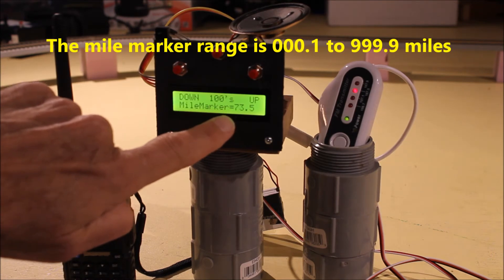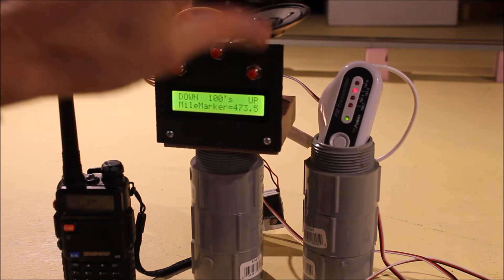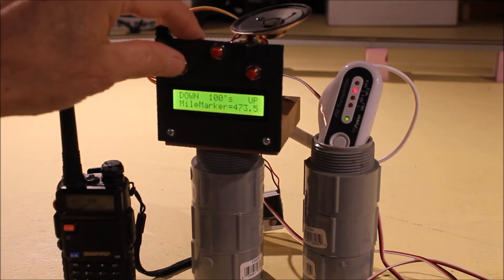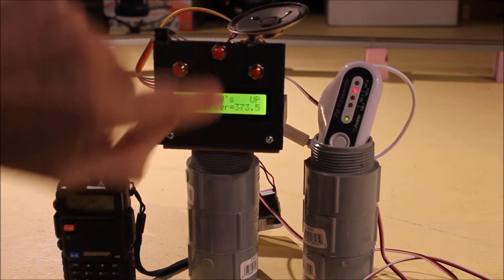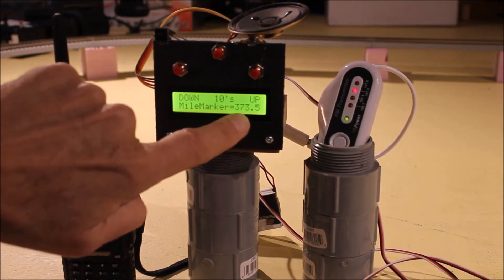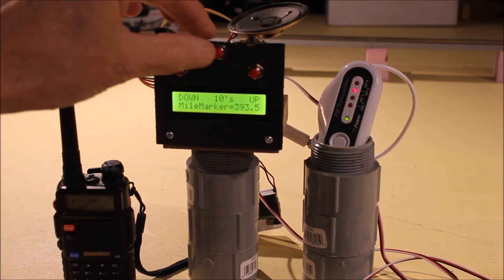Well there's nothing in the hundreds place. If I hit up that'll become a one, then a two, a three, a four and so on. Let's make it three, then hit the menu button again. It'll go to tens place. It wants to know if I want to change the seven. Well let's change that to a nine.